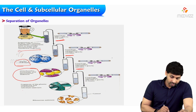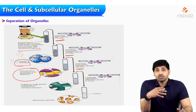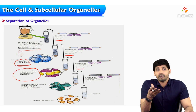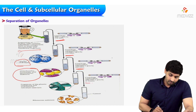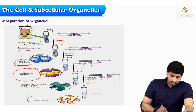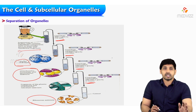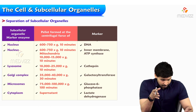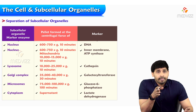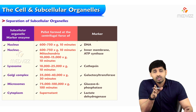Similarly, fragments of endoplasmic reticulum can be isolated by applying 2 lakh rotations per minute for 3 hours. Finally, ribosomes will be obtained, which are present in the cytosol. In this table, what is clearly shown is which subcellular organelles can be isolated by applying how much centrifugal force — that is, the number of rotations.